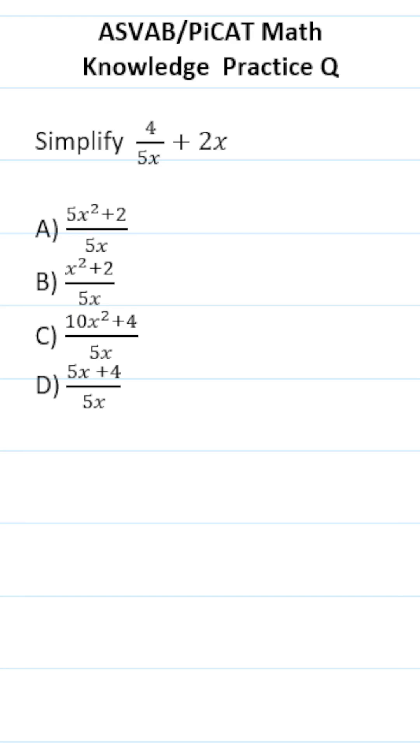This ASVAB PICAT Math Knowledge Practice Test question says simplify 4 over 5x plus 2x. In order to simplify this expression, we're going to treat these terms like fractions in that we're going to have to add them.